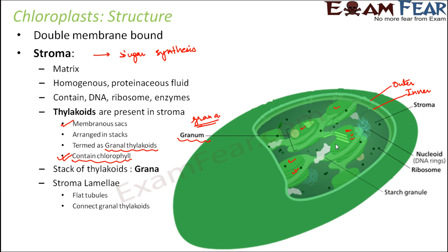There is another structure called stroma laminae. These are flat tubule-like structures which connect the granal thylakoids. You can see that one stack of thylakoids (one grana) is connected to another grana by these tube-like structures. This connecting structure is known as stroma laminae.